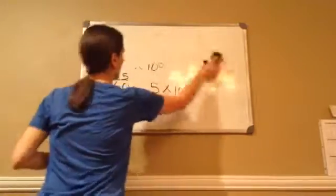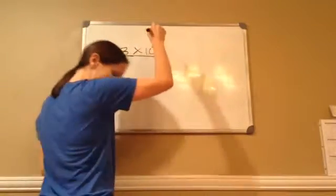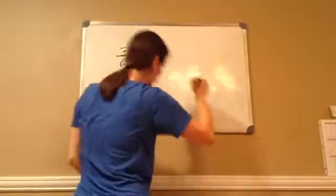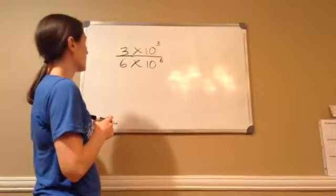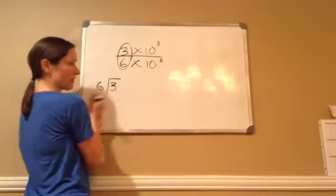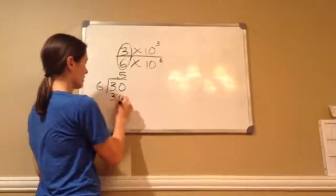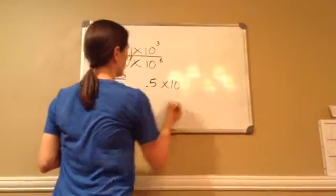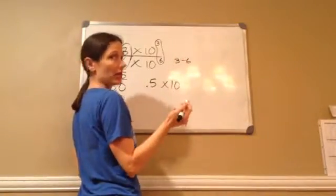Alright, let's try another one. You can do this one on your paper to see if you can figure it out: 3 times 10 to the 3rd power divided by 6 times 10 to the 6th power. What's my first step? You divide the two numbers in the front. 3 divided by 6. Now, there's a decimal there even if you can't see it. Remember that rule? Move the decimal up, and 6 times 5 is 30, so it's 0.5 as our answer. Times 10. Then what do I do with these? You subtract them. 3 minus 6 would be negative 3.